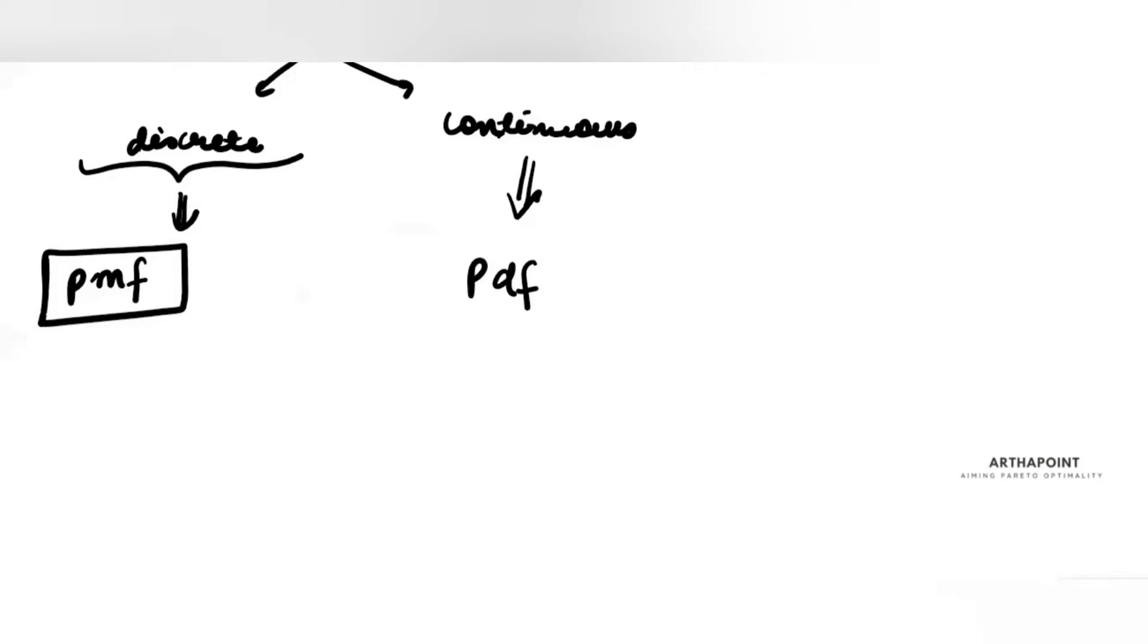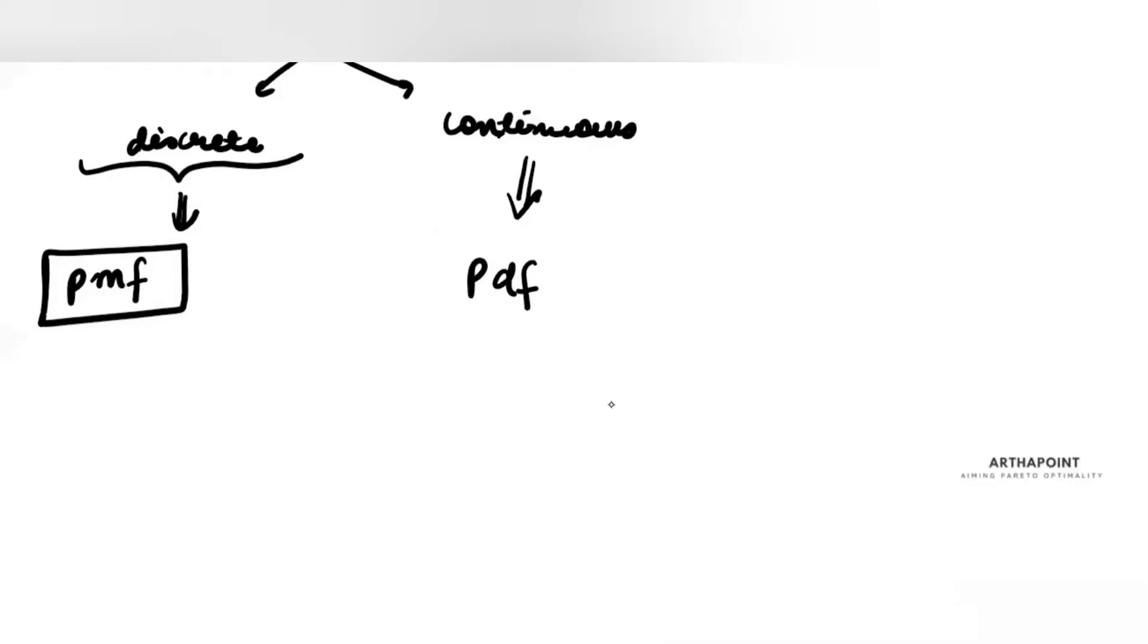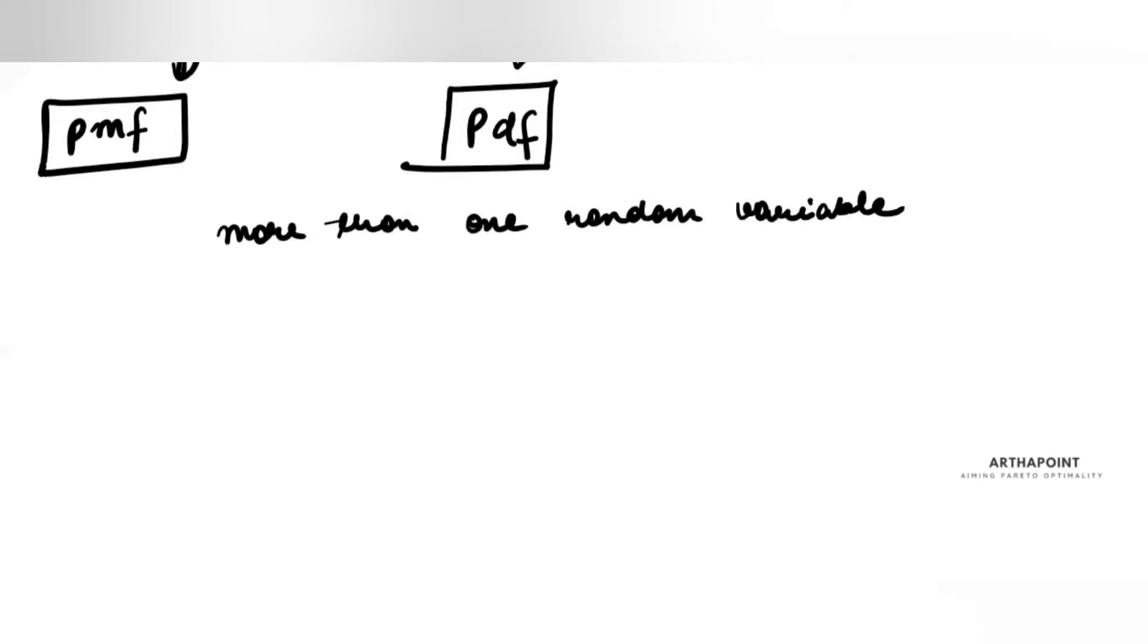Now, we want to introduce what happens when I include more than one random variable. For example, if I tell you that now I have two random variables X and Y.